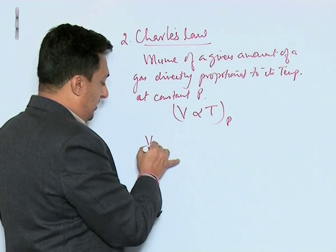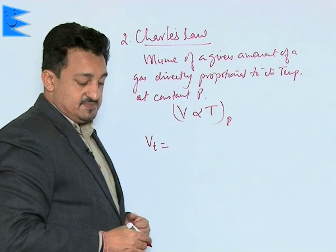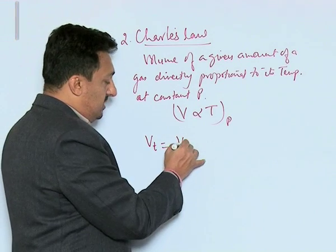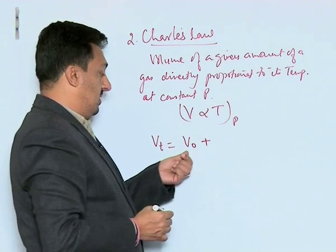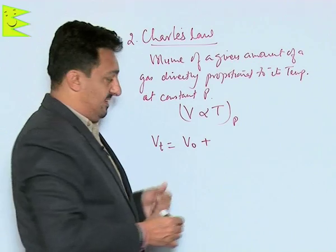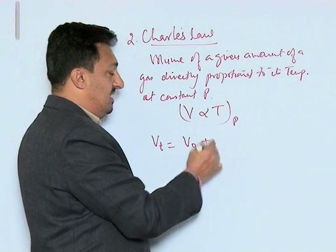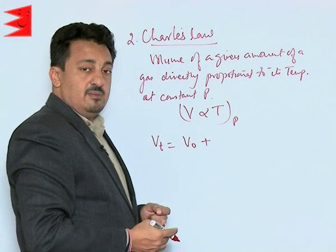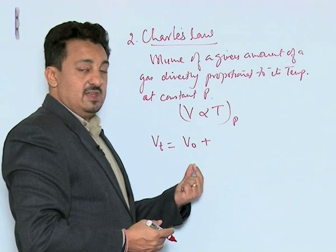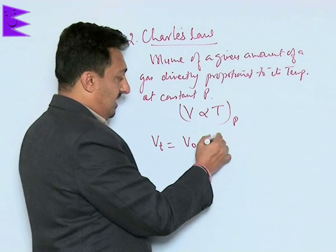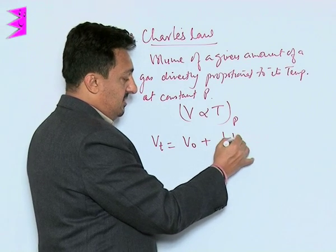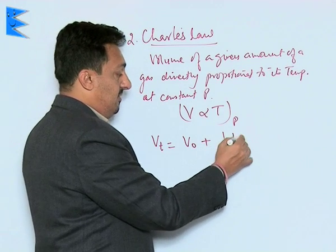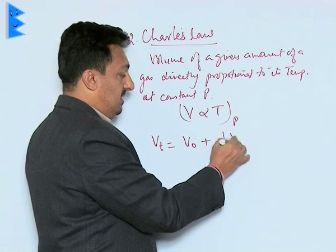The volume of a given amount of a gas at any temperature is equal to the sum of the volume it had at 0 degree Celsius along with the increase in volume by increasing the degrees of temperature. It will be written as 1 by 273 times T.